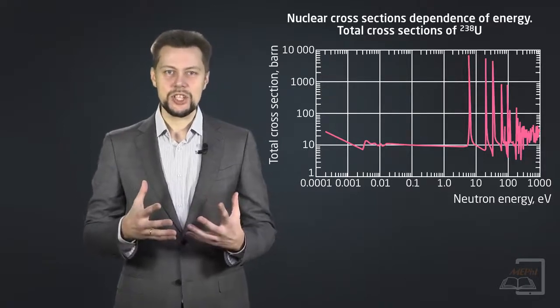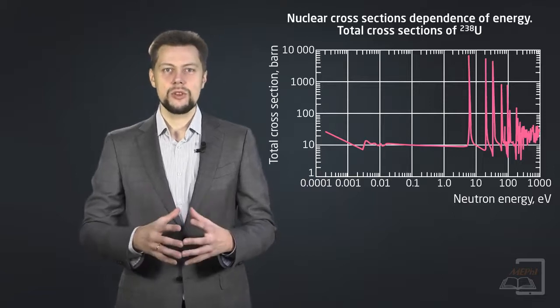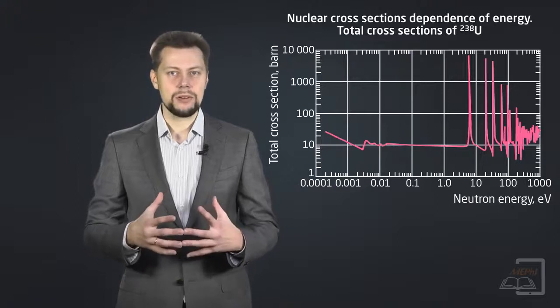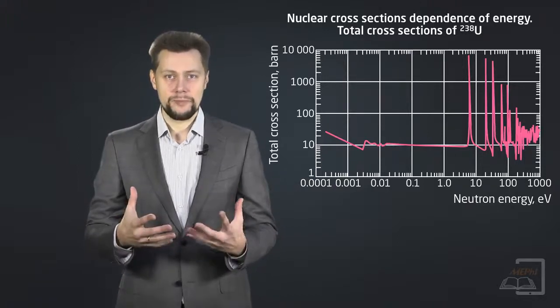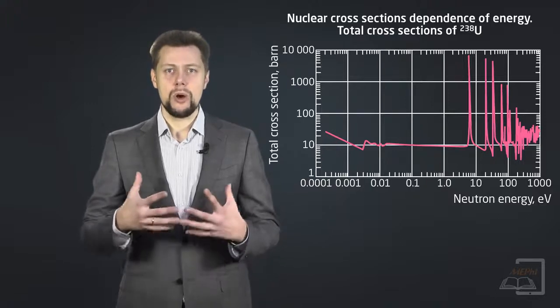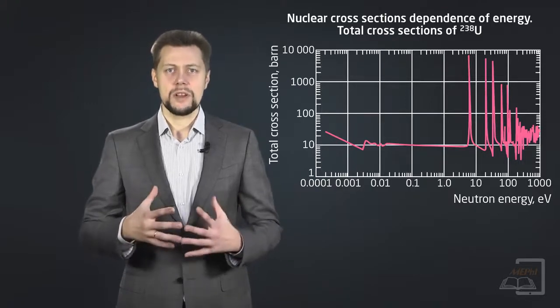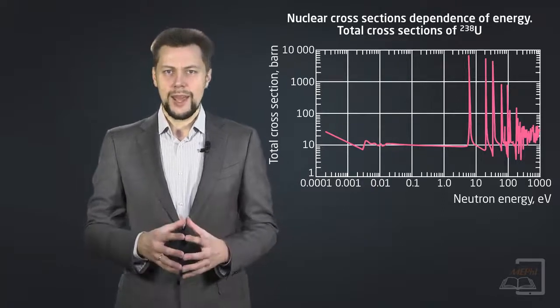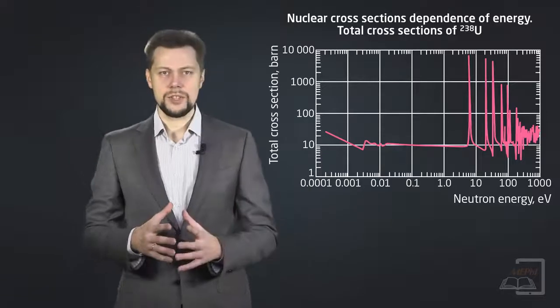As the scattering cross-sections are generally small, the total cross-section, means absorption plus scattering, shows the same behavior as the absorption one. In the first place, there is a region of lower energy, in which the cross-section decreases with increasing energy of neutrons, as depicted for uranium-238.